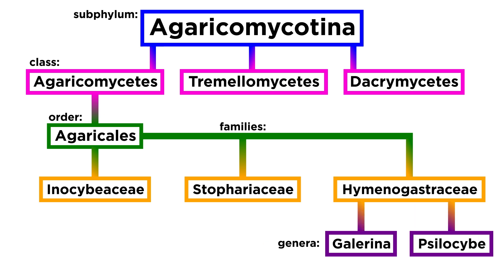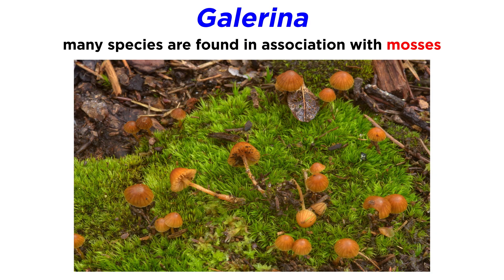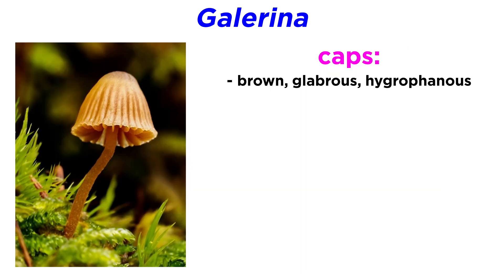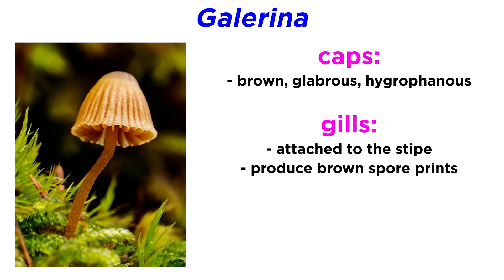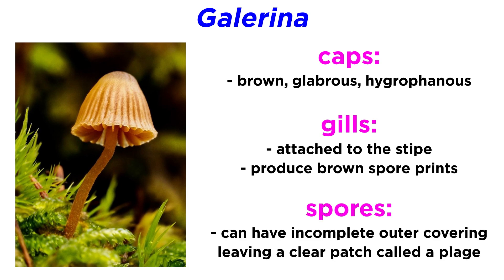We will discuss two important genera in Hymenogastraceae: Galerina and Psilocybe. Let's begin with the genus Galerina. All Galerina species are saprobic, but many species are found in association with mosses. The caps of these mushrooms are typically brown, glabrous, and hygrophanous. The gills will be attached and produce variable brown spore prints. The spores of many Galerina species have a distinct feature where part of the outer covering is incomplete, leaving a clear patch called a plage.